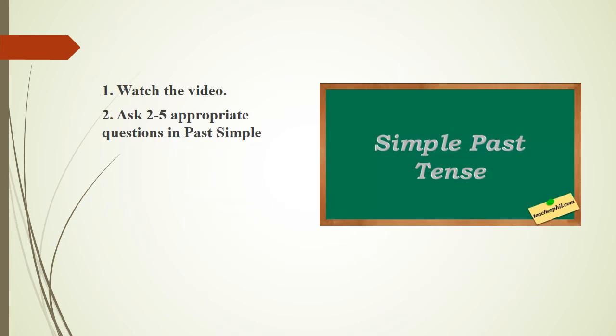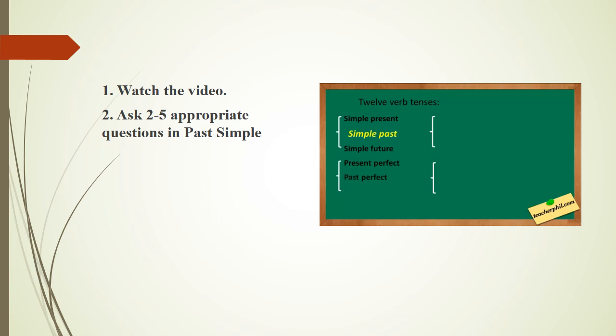Simple Past Tense. As a review, the twelve verb tenses are the simple present, simple past, simple future, present perfect, past perfect, future perfect, present progressive, past progressive, future progressive, present perfect progressive, past perfect progressive, and future perfect progressive. This lesson will talk about simple past.